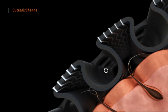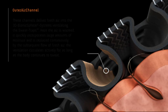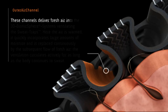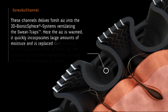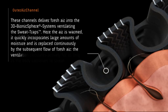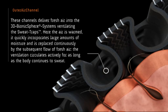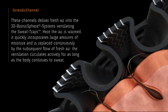The outer air channels deliver fresh air into the 3D Bionic Sphere system, ventilating the sweat traps. Here the air is warmed, quickly incorporating large amounts of moisture and is replaced continuously by the subsequent flow of fresh air. The ventilation circulates actively for as long as the body continues to sweat.